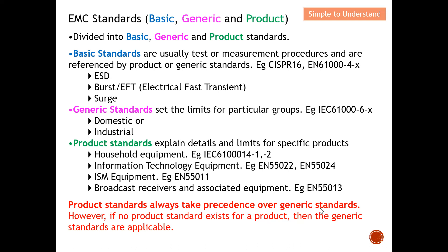In short, the product standard always takes precedence over the generic standard. If we have a product standard, we use that to test our device. If we cannot find any applicable product standard, we move a step back and use the generic standard. If no product standard exists for a product, the generic standard is applicable.